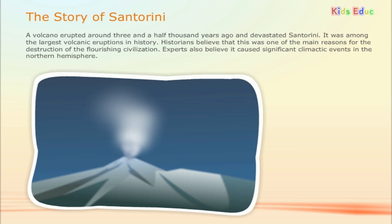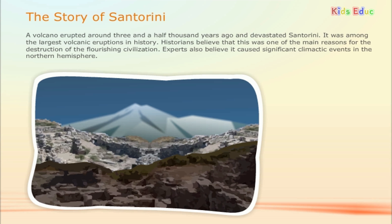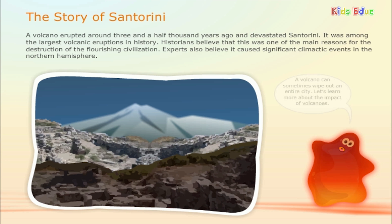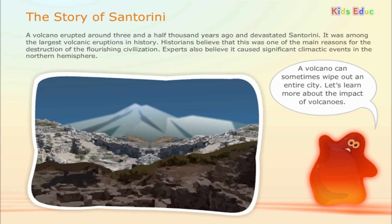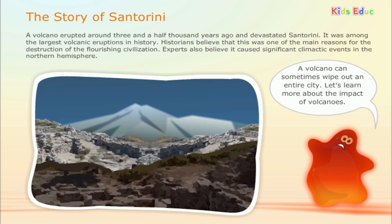A volcano erupted around 3,500 years ago and devastated Santorini. It was among the largest volcanic eruptions in history. Historians believe this was one of the main reasons for the destruction of the flourishing civilization. Experts also believe it caused significant climatic events in the northern hemisphere. A volcano can sometimes wipe out an entire city.